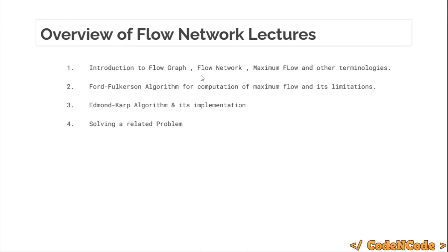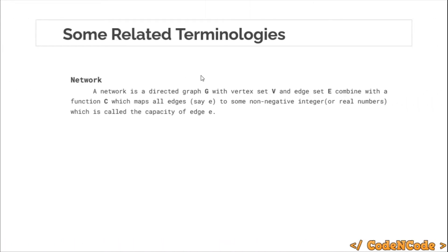This first lecture covers the basic terminologies of maximum flow and flow networks. First, what is a network? A network is a directed graph G with vertex set V and edge set E, combined with a special function C which maps all of the edges to some non-negative integer, or sometimes real numbers, defining the capacity of each edge.